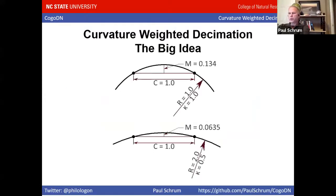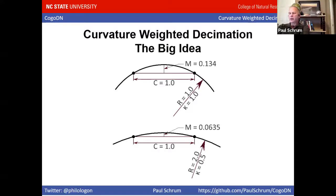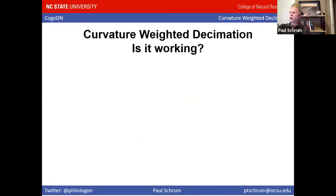Another way to look at the big idea: imagine a perfect arc segment of a circle. If the radius is one, the curvature is one over one, which equals one, and the maximum error is 0.134 — in whatever units, meters or feet, as long as they're consistent. C is the spacing between sample points. If you cut the curvature in half to 0.5 inverse meters, you get a lower maximum error at the midpoint with the same point sampling distance.